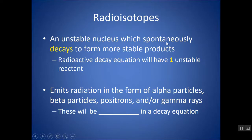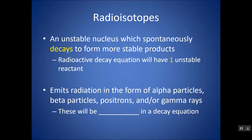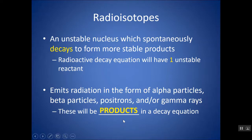An unstable nucleus that spontaneously decays to form more stable products is called a radioisotope. When we write a decay equation, we have just one reactant on the left-hand side. As products, you might see an alpha particle, beta particle, positron, and/or gamma rays on the right-hand side.